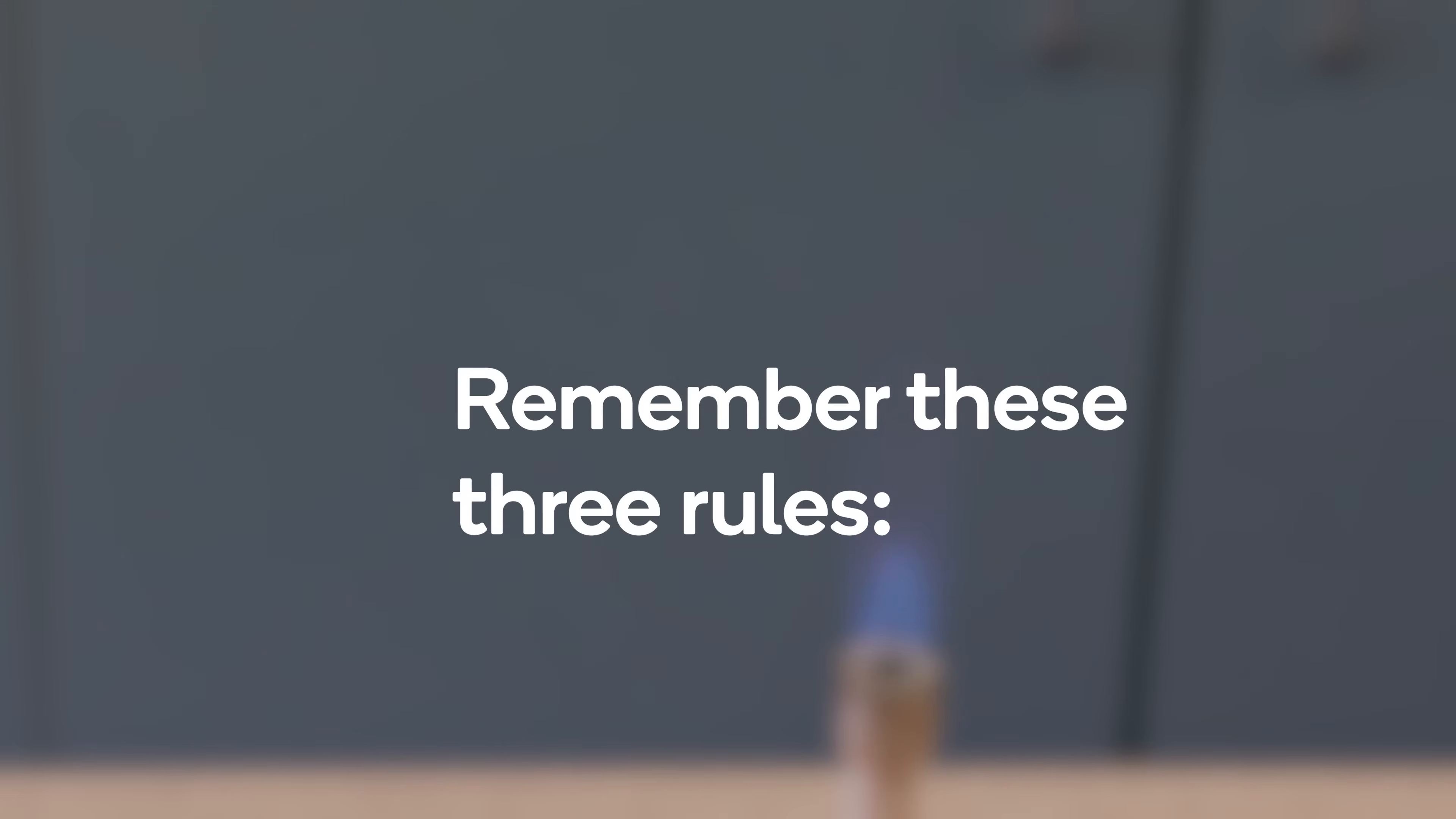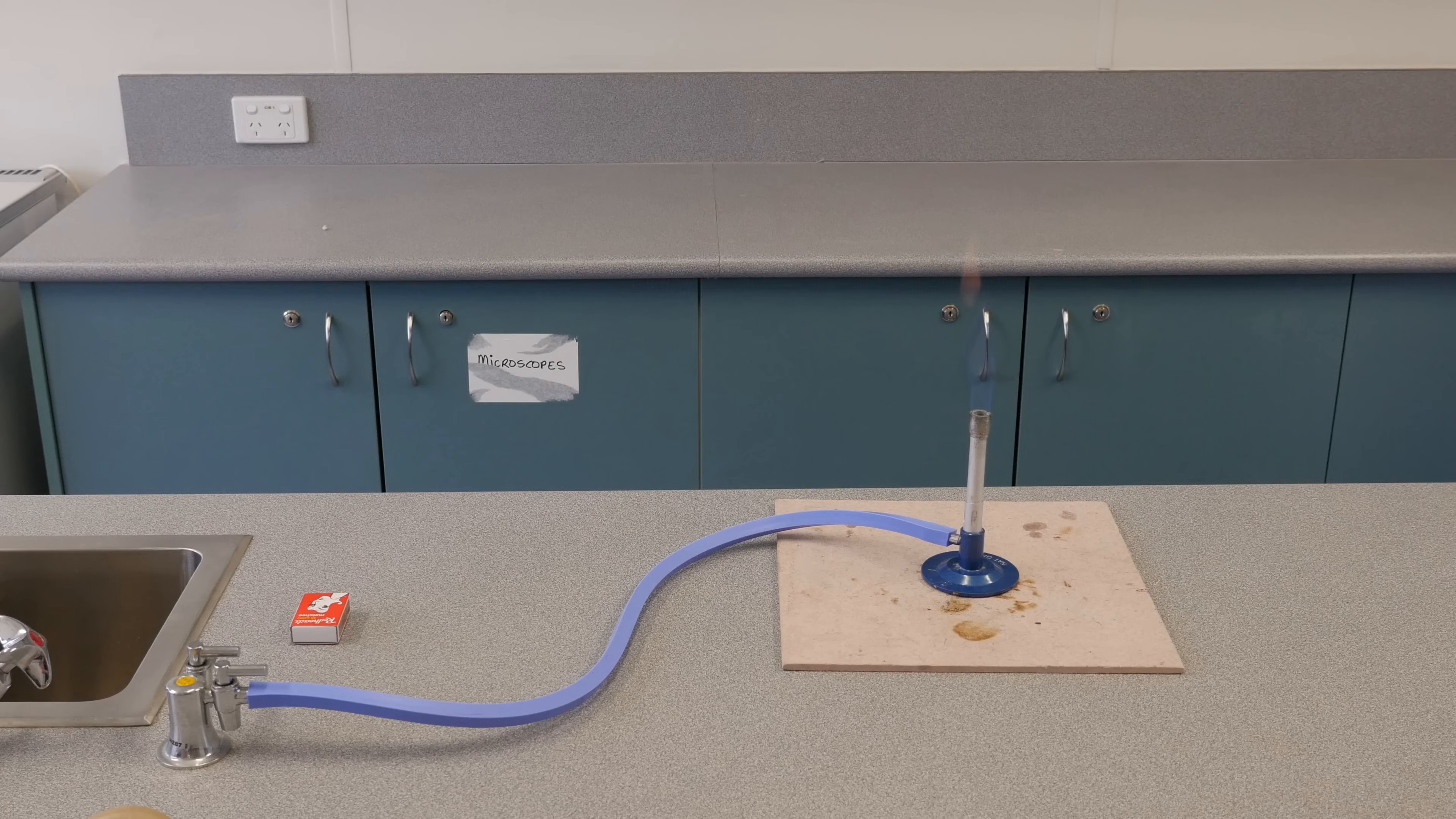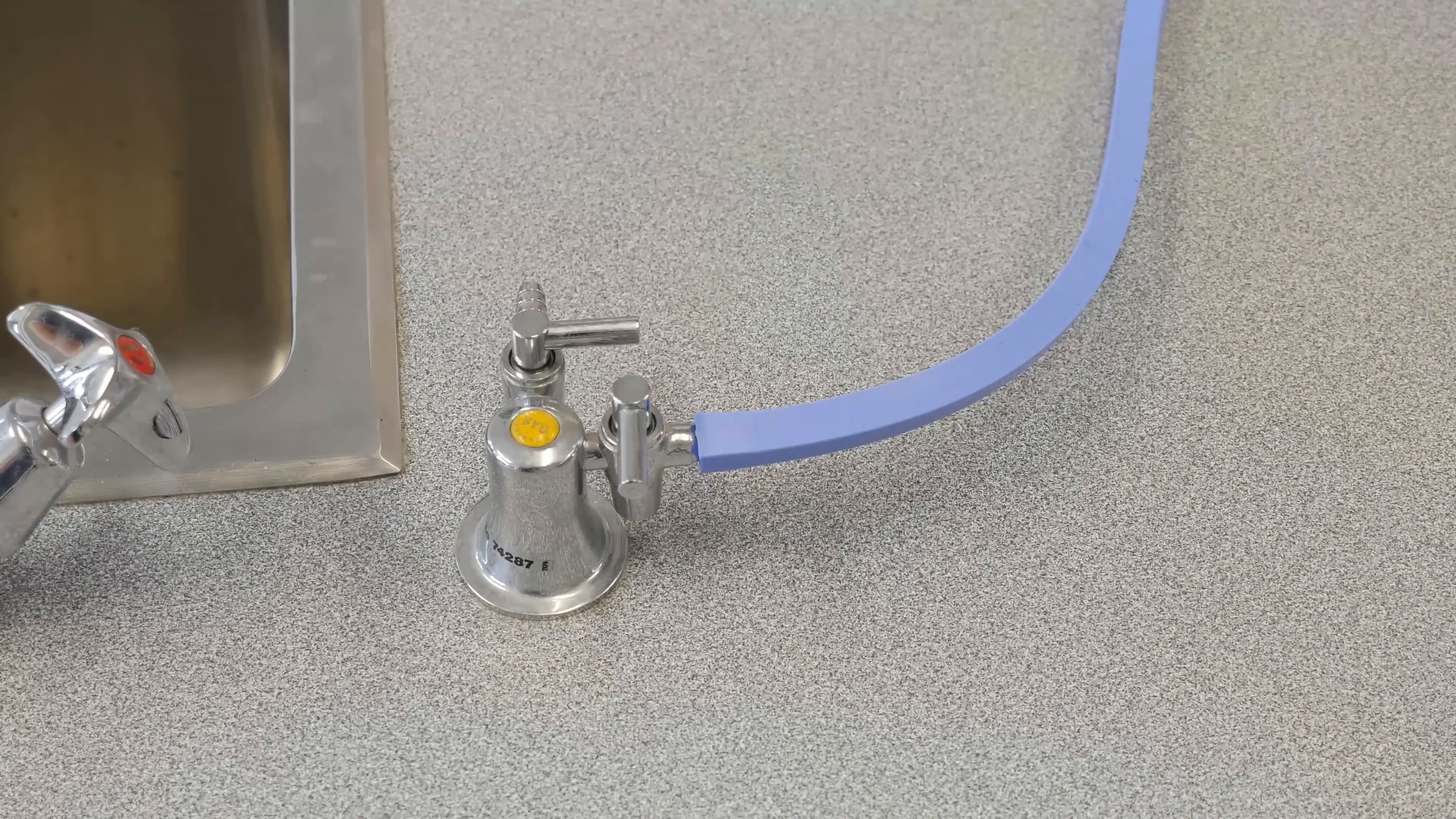There are three more safety rules for using the Bunsen burner while it's lit. If you need to move the burner, hold it by the base. Don't touch it any higher than the collar. Never leave a lit Bunsen burner unattended. And if anything goes wrong, turn off the gas tap immediately.